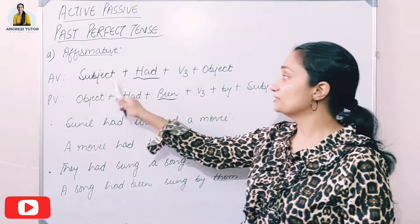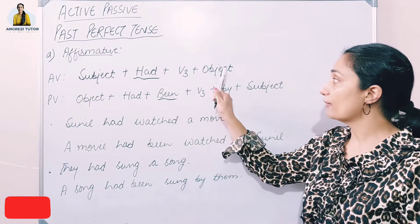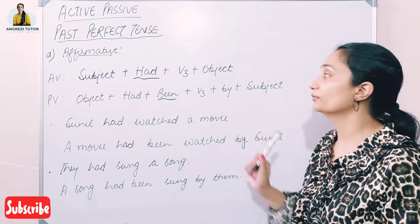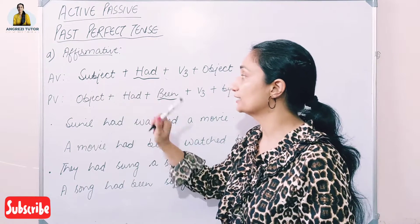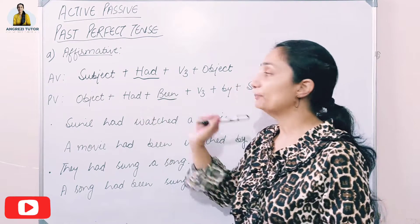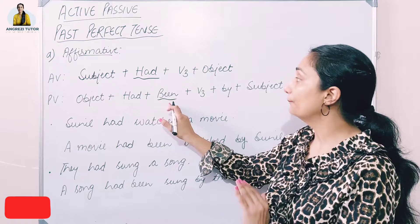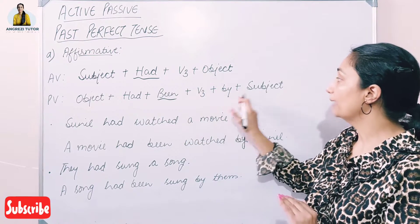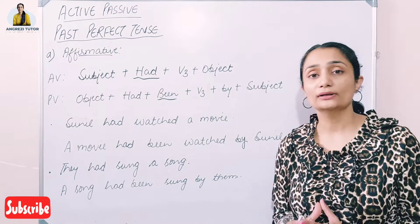The formula is: Subject + had + Verb (third form) + Object for active voice. We convert it to passive as: Object + had + been + Verb (third form) + by + Subject.